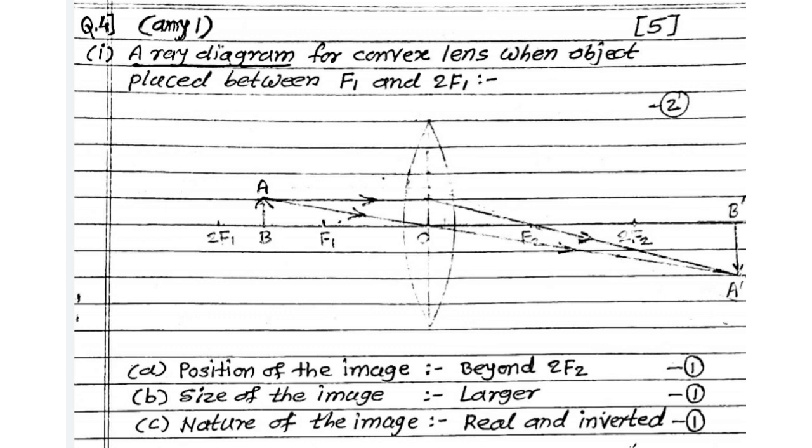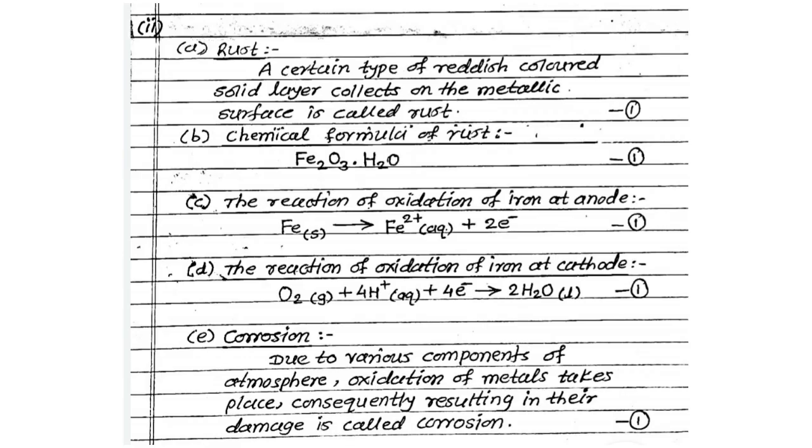Now see the answer of that first one. We are drawing the ray diagram. The object is between 2F1 and F1. So image is obtained beyond 2F2. See the answer. Position of image is beyond 2F2. For diagram you are getting 2 marks. Don't forget to draw the arrow in the diagram. Size of the image is enlarged. Check there. And nature of the image is real and inverted. You are getting 5 marks.